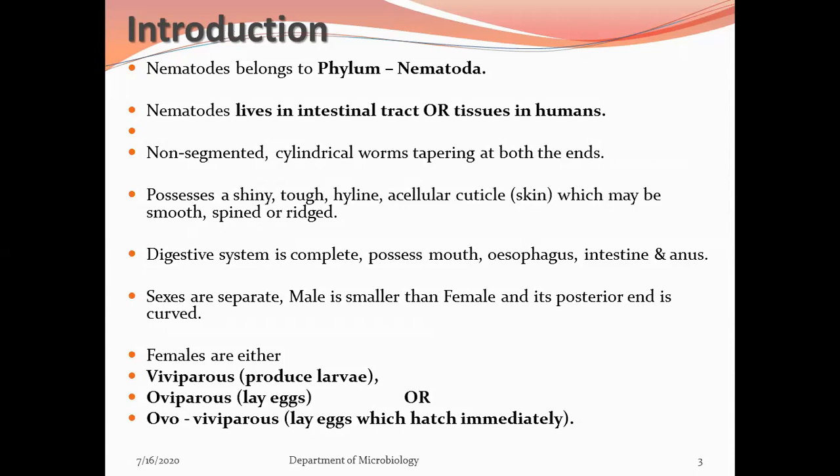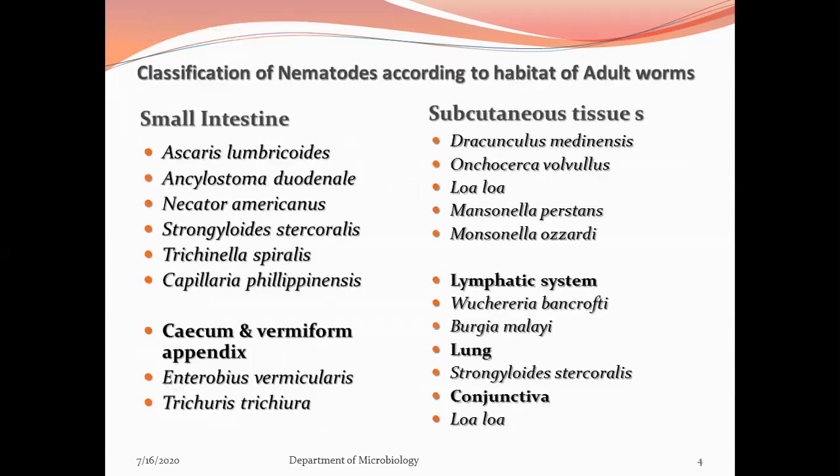Nematodes are probably the most widespread animal group in the world. Many are non-pathogenic and exist as free-living forms in fresh or marine water and soil, while few species are pathogenic and exist as parasitic forms in animals and humans. The systemic classification is based on Anderson et al.